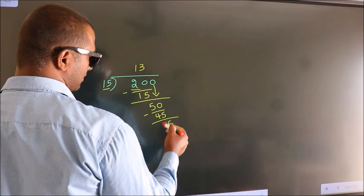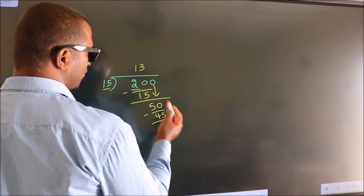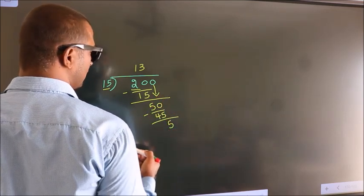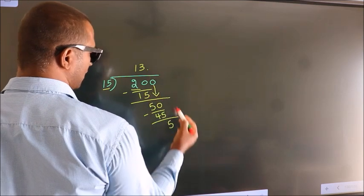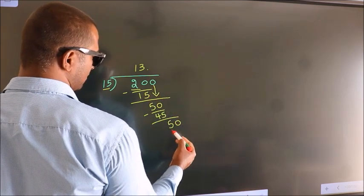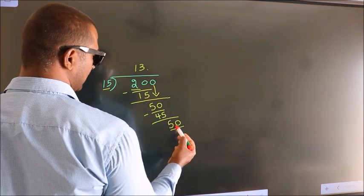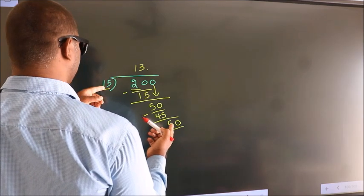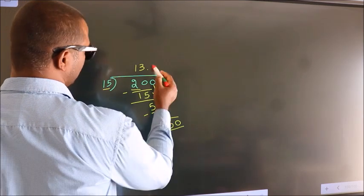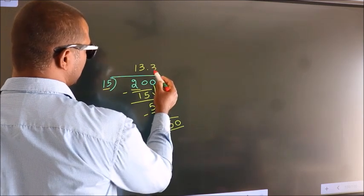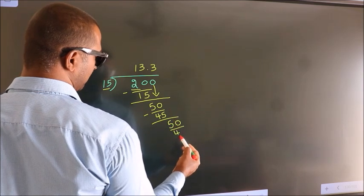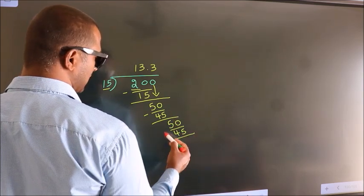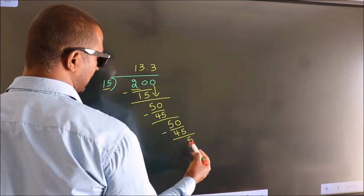After this, there are no more numbers to bring down. So what we do is we put a dot and take 0, so 50. A number close to 50 — in the 15 table, 15 threes is 45. Now we subtract — we get 5.